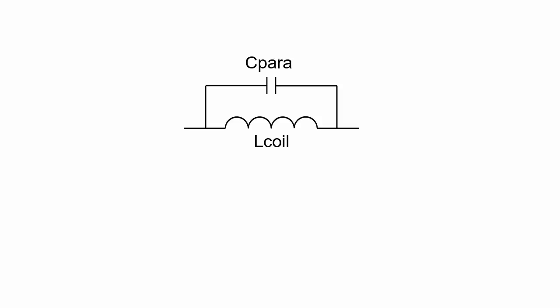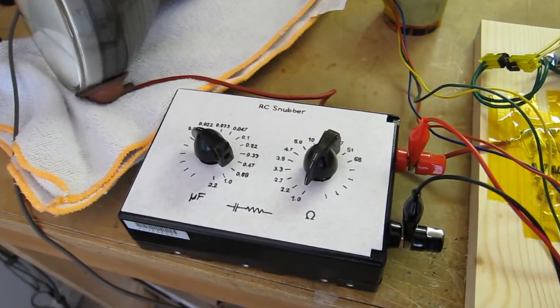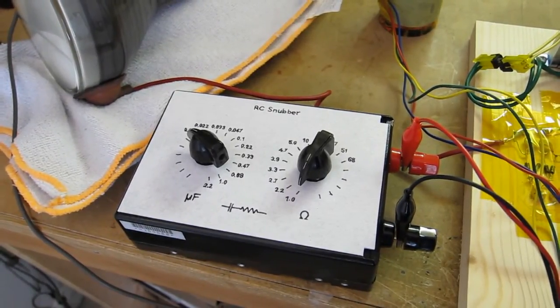The easiest way to fix it is to connect an RC snubber network in parallel with the coil. Now, of course, there's a way to calculate the formulas and figure out the required component values. But I found that it's much easier just to build a little cheater box and wire that into the circuit and experiment with some different values.